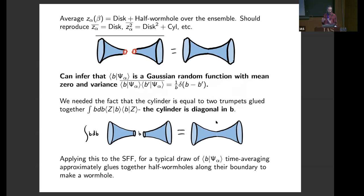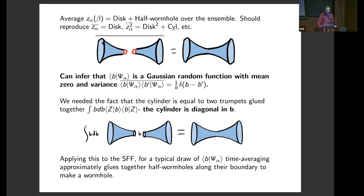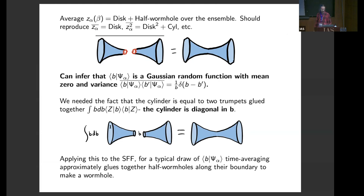It's useful to use this wormhole plus half wormhole computation and demand that it reproduces the ordinary computation of average partition functions. The partition function for a fixed member of the ensemble is a disk plus a half wormhole; averaging that should give the average partition function given by the disk. Averaging the square should give two disks plus a wormhole. This requires that two half wormholes averaged equal the wormhole, from which we can infer that this single-universe wave function is a Gaussian random function with mean zero and a specific variance. We also need the fact that the cylinder connecting two Z boundaries equals two trumpets glued together — you take two trumpets with the same value of B and integrate over B — so the cylinder is diagonal in B.